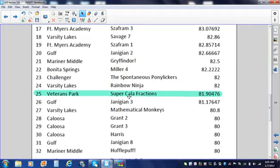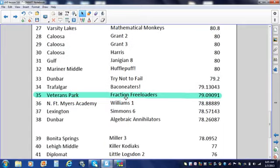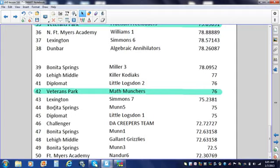And let's see where the rest of you fall. There's the Fraction Freeloaders at number 35. That certainly deserves a good job. Good job! But no checkmark, because you did not finish in the top 25. And there we are. Math Munchers certainly deserves a good job at 42. Good job! But, you know it, no checkmark for you, you did not finish in the top 25.